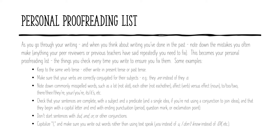Check that your sentences begin with a capital letter and end with ending punctuation. Don't start sentences with 'but', 'and', 'or', or other conjunctions — that's part of making sure they are not sentence fragments. Capitalize the 'I' when you're saying 'I am' or something like that. And make sure you write out words rather than using text speak: 'Y-O-U' instead of the letter U, 'I don't know' instead of IDK, etc.